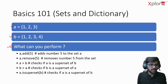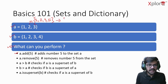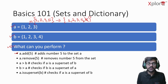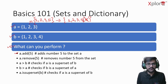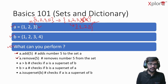The first operation is a.add(5). So the set {1, 2, 3} becomes {1, 2, 3, 5} — five gets added. If I perform a.add(5) again, the set remains {1, 2, 3, 5} because all elements in a set are unique. The next operation is a.remove(5), which removes five from the set, leaving us back with {1, 2, 3}.